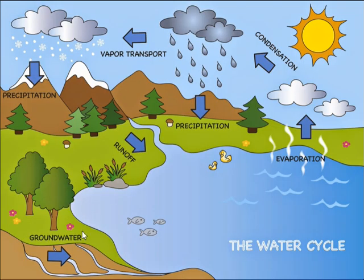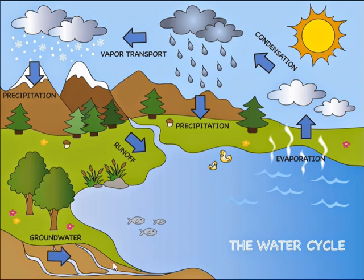This is the visual representation of the water cycle. We have evaporation, condensation, vapor transport, precipitation as snow or rain, runoff, and groundwater.